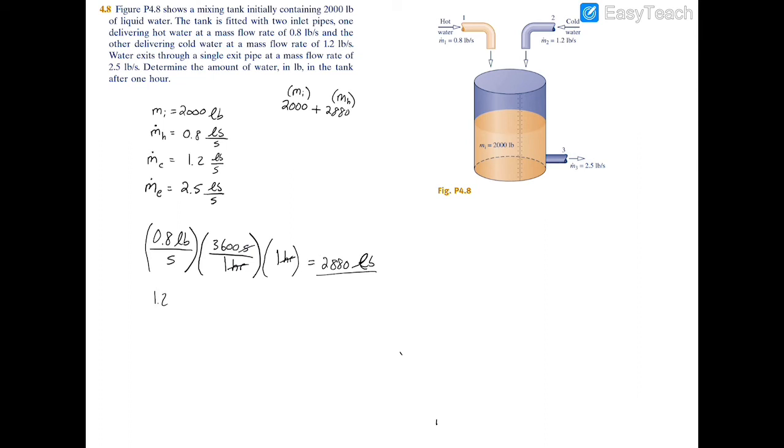Times 3600 seconds per hour, because once again you're given the rate in pounds per second and you need the rate in pounds per hour to multiply it by the time. And then the time is 1 hour. So now you can cross this out, hours and hours, seconds and seconds. And if you do the math out, you'll have 4320 pounds.